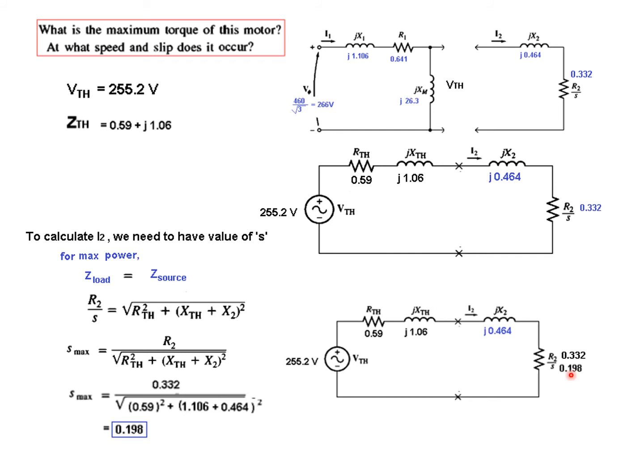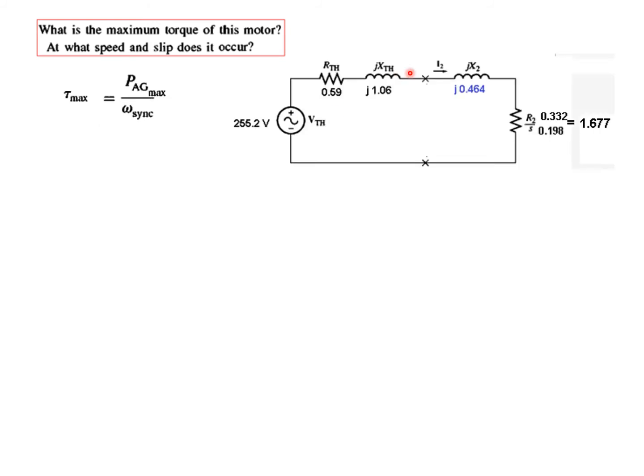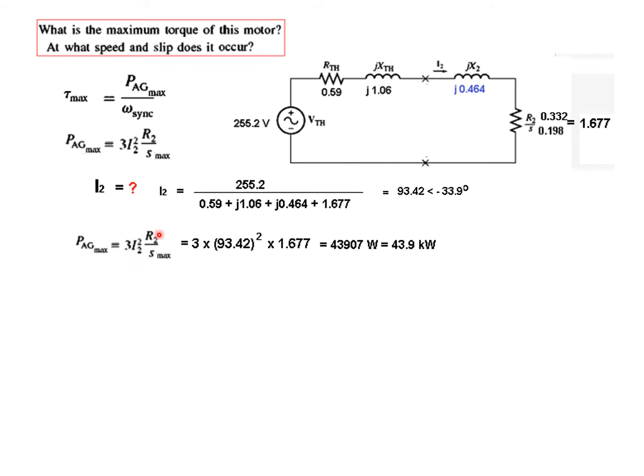We plug in 0.198 in place of S, so R_2 over S becomes 1.67. We need to calculate T_max, and for that we need P_AG. For that we calculate current I_2, which is 255.2 divided by all the impedance, giving 93.42 amperes. P_AG is 3 times I squared R_2 over S, which gives the air gap power of 43907 watts.